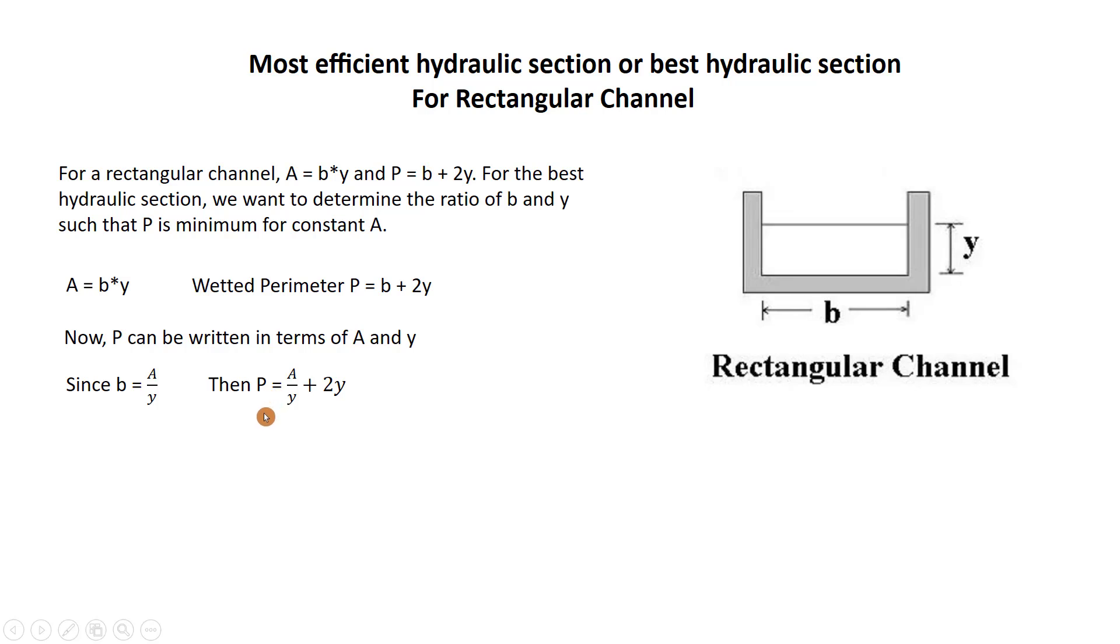Now it's easy to get the derivative of wetted perimeter. After derivation we get dP/dY equal to minus A over Y squared plus two equal to zero. That is the derivation for this equation. Derivative of 2Y equal to two.